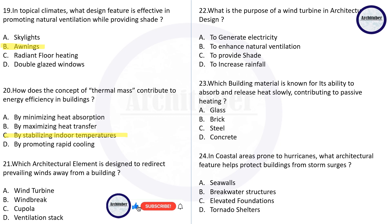Question twenty-one: which architectural element is designed to redirect prevailing winds away from a building? The correct answer is a wind turbine. Question twenty-two: the correct answer is to generate electricity. Question twenty-three: which building material is known for its ability to absorb and release heat slowly, contributing to passive heating? The correct answer is brick.